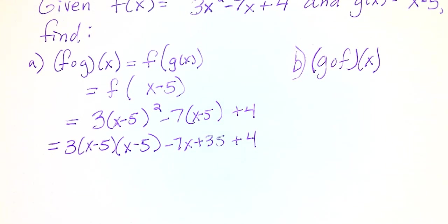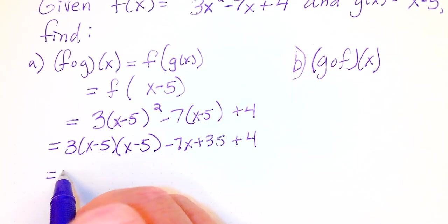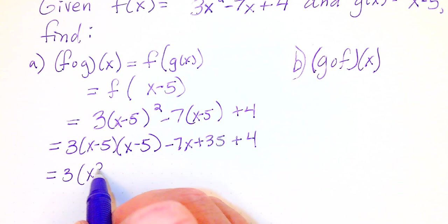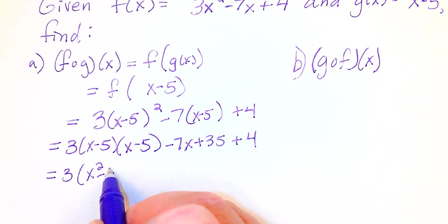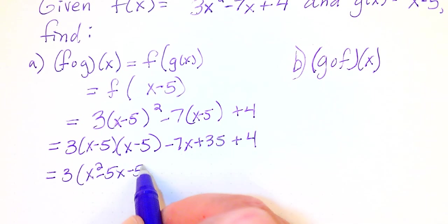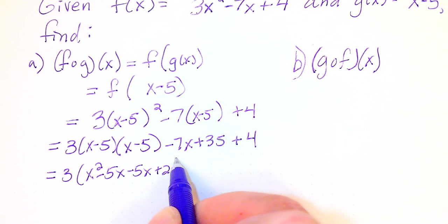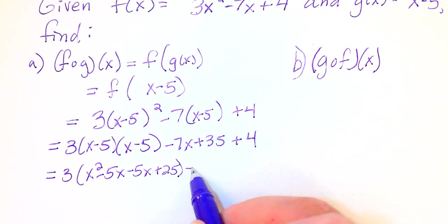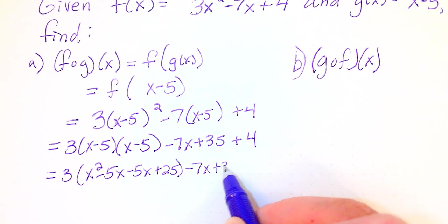We want to take another step and do the FOIL here, FOIL method. So 3 times x squared minus 5x minus 5x plus 25 and then bring down the rest of this minus 7x plus 35 plus 4.